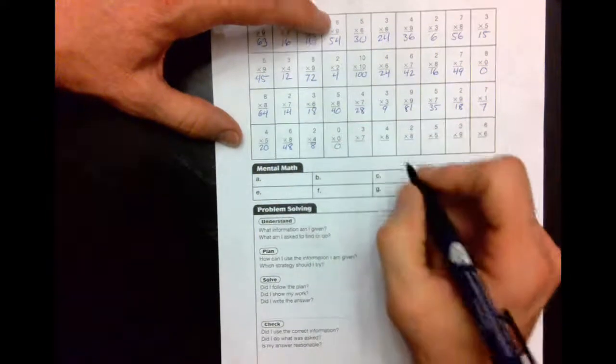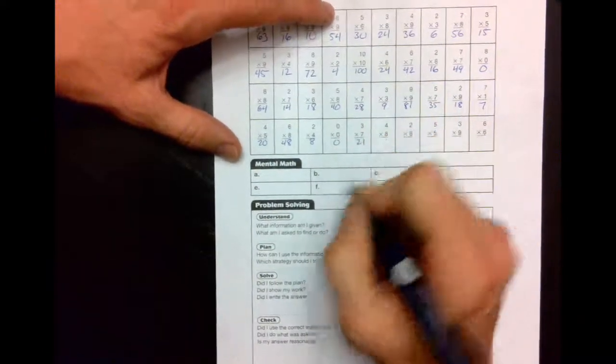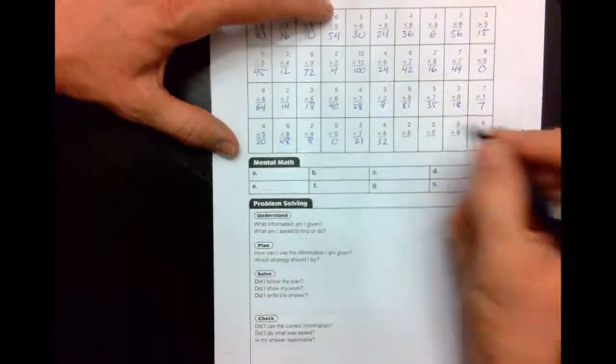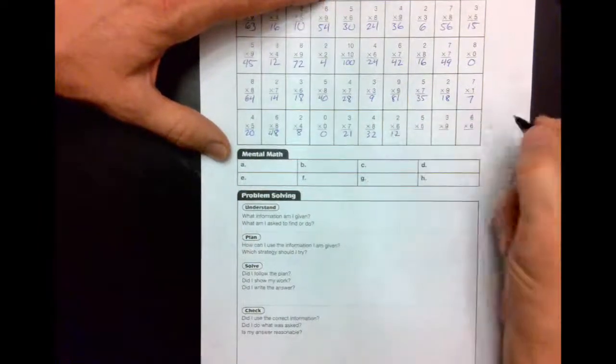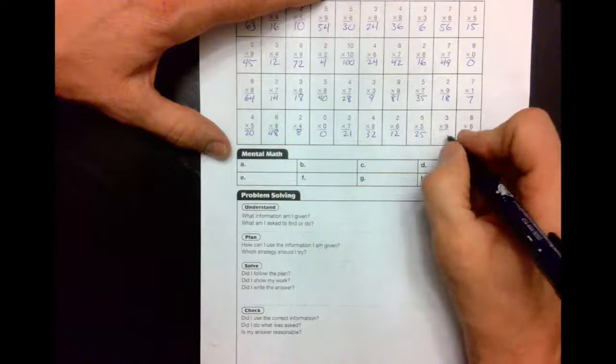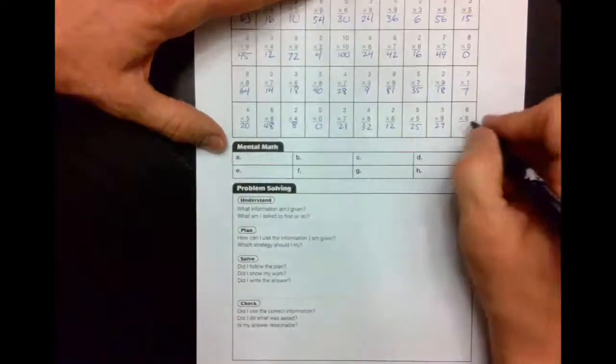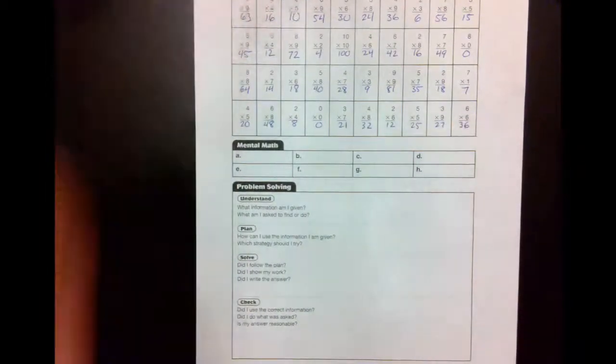0 times 0 is 0, 3 times 7 is 21, 4 times 8 is 32, 2 times 6 is 12, 5 times 5 is 25, 3 times 9 is 27, and 6 times 6 is 36.